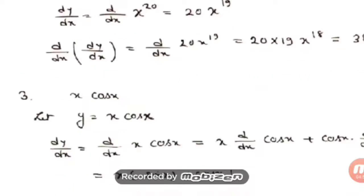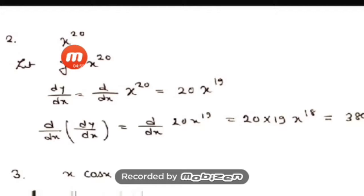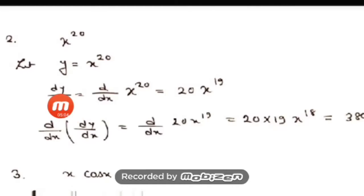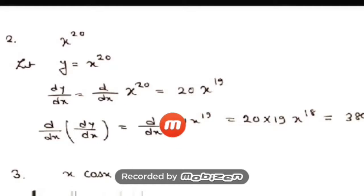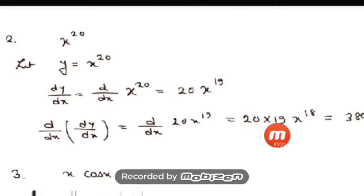Question number 2 is y = x²⁰. The derivative dy/dx = d/dx of x²⁰ = 20x¹⁹ using the xⁿ formula. Then for the second order derivative, d/dx of (dy/dx) = d/dx of 20x¹⁹. The 20 is constant, comes out; derivative of x¹⁹ is 19x¹⁸. So the product gives d²y/dx² = 380x¹⁸.